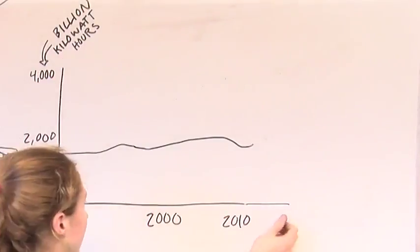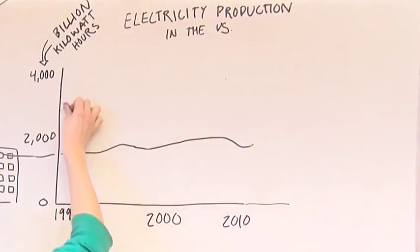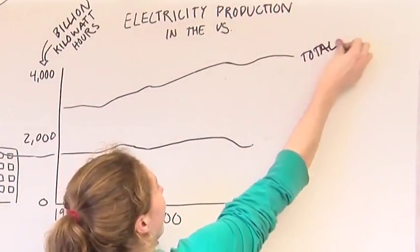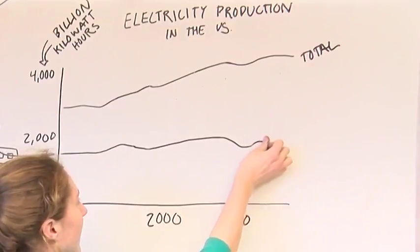However, the overall use of electricity in the US has been increasing. In 1990, about 2,800 billion kilowatt hours of electricity were consumed. 30 years later, in 2010, the US used about 1,000 more billion kilowatt hours of electricity.